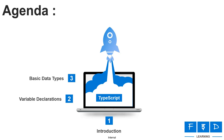The next topic is Basic Data Types. Under this topic, we will learn type annotations and what are the different types of data types available in TypeScript, such as object, array, tuple, enum, union, and much more.